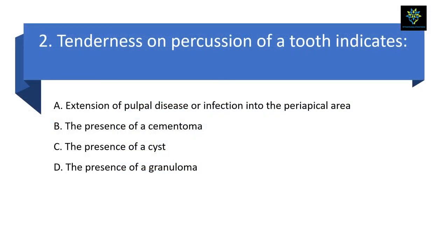Second question: tenderness on percussion of a tooth indicates — Option A: extension of pulpal disease or infection into the periapical area; Option B: the presence of a cementoma; Option C: the presence of a cyst; Option D: presence of granuloma. In case of cementoma, cyst, and granuloma, tenderness on percussion is not necessarily evident. But in case of any pulpal disease or infection in the periapical area, you will definitely get tenderness on percussion. So the answer is Option A — extension of pulpal disease and infection into the periapical area.